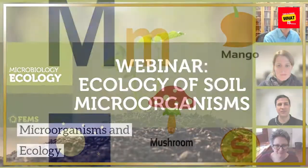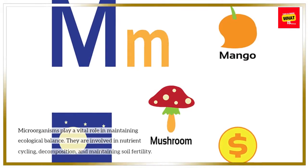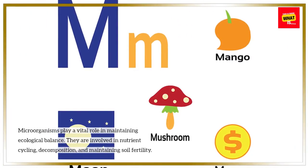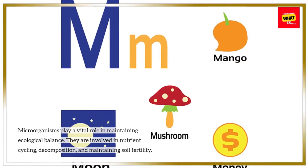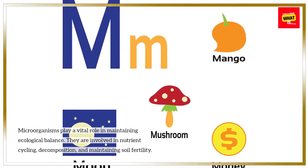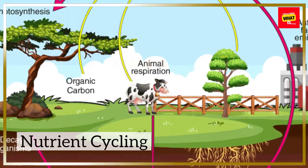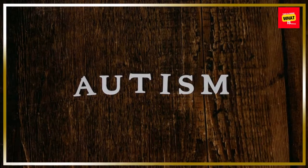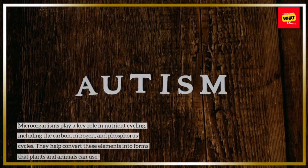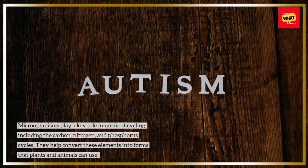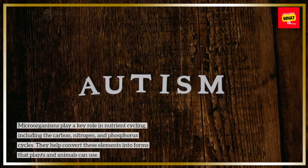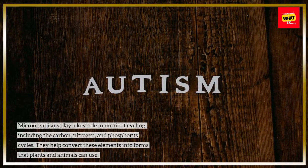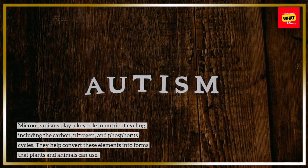Microorganisms and Ecology. Microorganisms play a vital role in maintaining ecological balance. They are involved in nutrient cycling, decomposition, and maintaining soil fertility. Nutrient Cycling: microorganisms play a key role in nutrient cycling, including the carbon, nitrogen, and phosphorus cycles. They help convert these elements into forms that plants and animals can use.